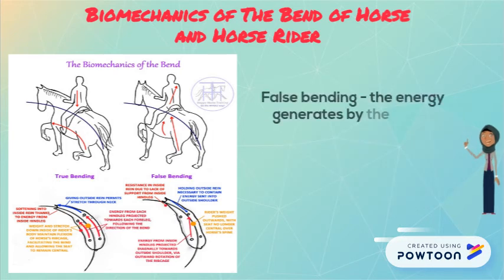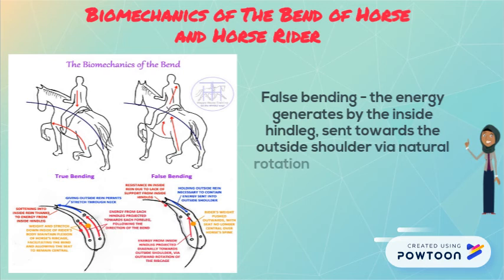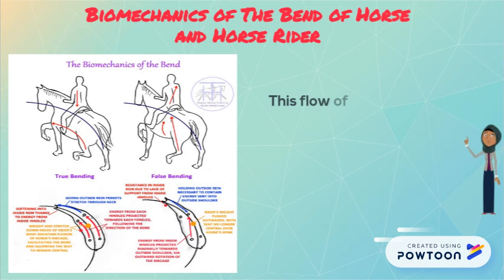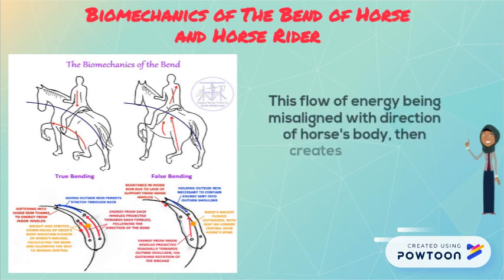False bending. The energy generated by the inside hind legs goes towards the outside shoulders. The bio-natural rotation causes the horse to drift to the outside as the inside hind leg pushes off. This flow of energy begins aligned with the direction of the horse's body, then creates a continual unbalanced force.